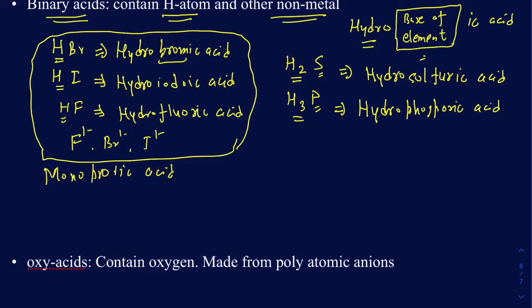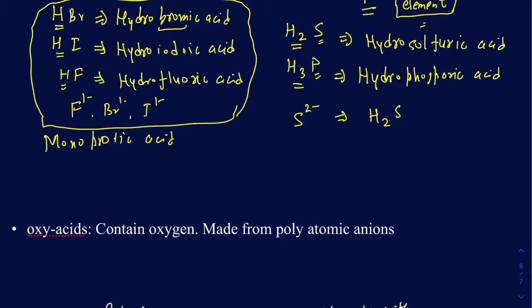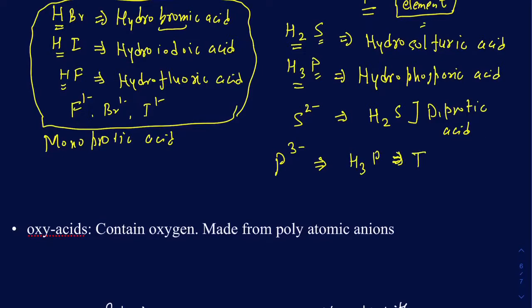If we focus on sulfur, sulfur is actually 2-, so since it's 2-, if I want to make an acid out of it, I would need two hydrogens to balance out the charge — because hydrogen has a 1+ charge when bonding with a non-metal. So H2S is called a diprotic acid, because it has two protons. And H3P — phosphorus is in Group 5A, so it has a 3- charge, meaning I need three hydrogens, making it a triprotic acid.